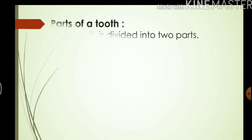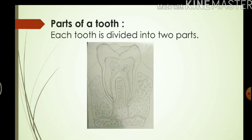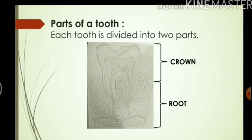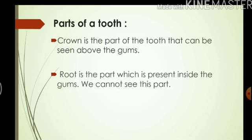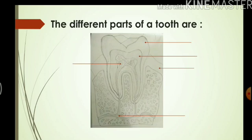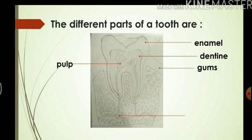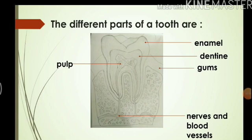Now let us move on to the next part of the chapter where we will read about the structure of a single tooth. A tooth inside the gums looks like this. The upper part is called the crown and the lower part is called the root. The crown is the part of the tooth that can be seen above the gums, and the root is the part which is present inside the gums — we cannot see this part. The different parts of a tooth are: enamel, dentine, gums, pulp, and nerves and blood vessels.